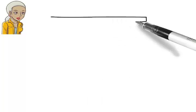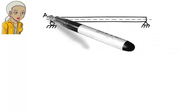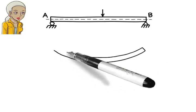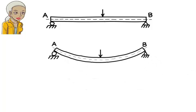Let's start with a simple example. Here is a simply supported beam subjected to a downward load. How does the beam deflect? Downward, right? Like this. Common sense suggests that if we push on a beam, it bends downward. What may not be intuitively obvious, though, is how the beam behaves at the supports.